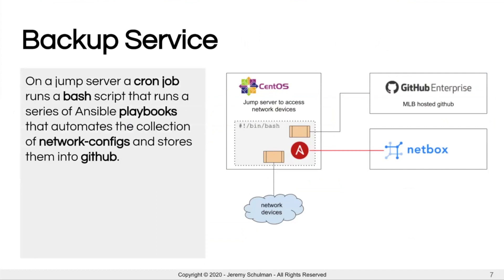When we look at the backup service itself, the way it operates today is we have a jump server that is ACL-controlled so we can access our devices. That jump server has a cron job, that cron job runs a bash script, and that bash script executes a series of playbooks. Those playbooks first pull down the GitHub repository of our current configs, then go to our network devices to pull the network configurations, and then store them back into GitHub.